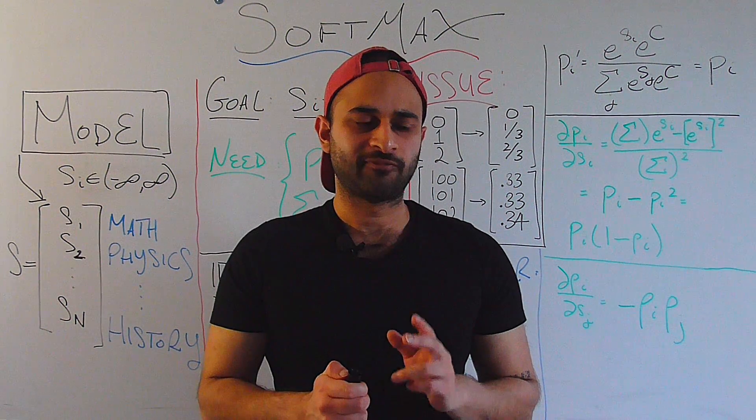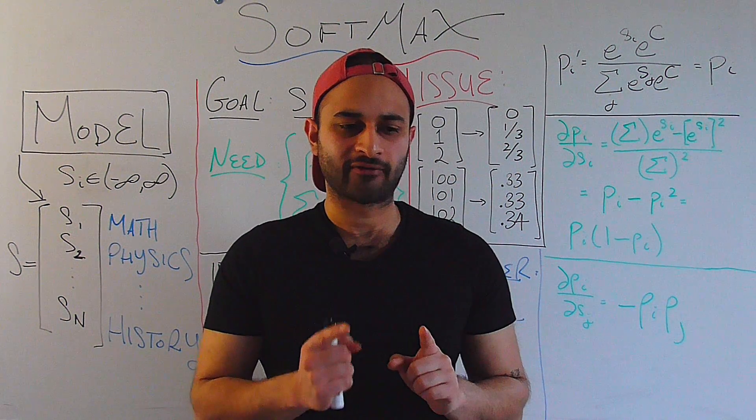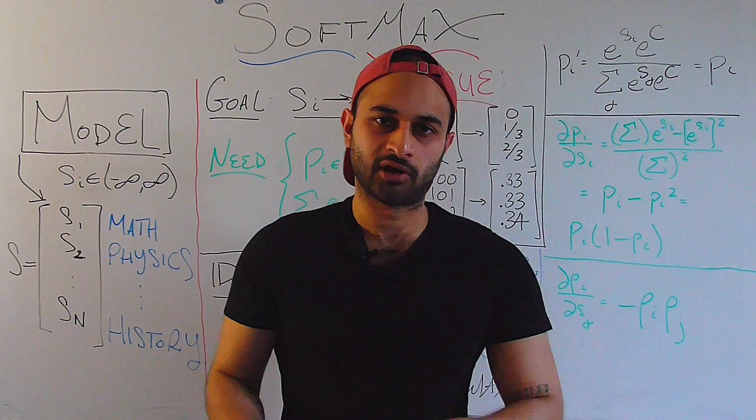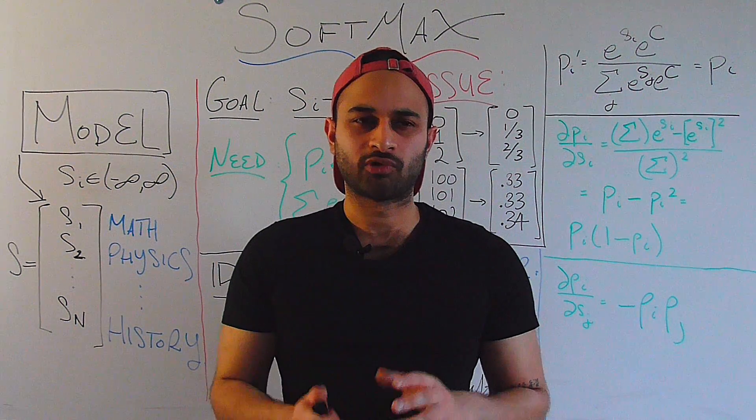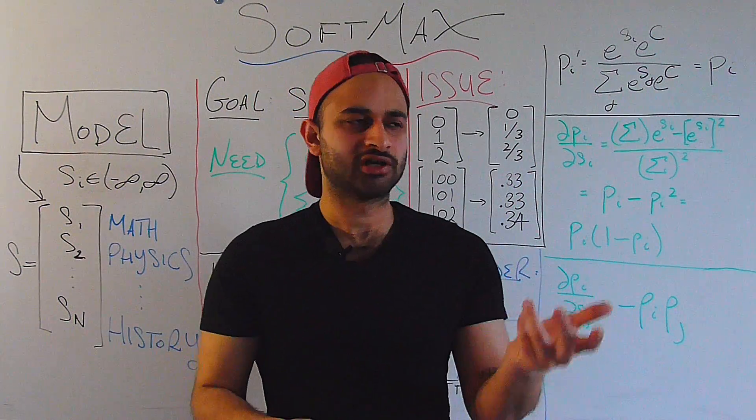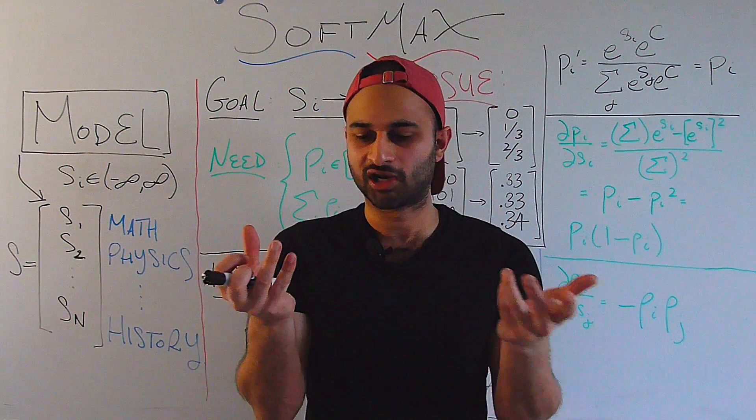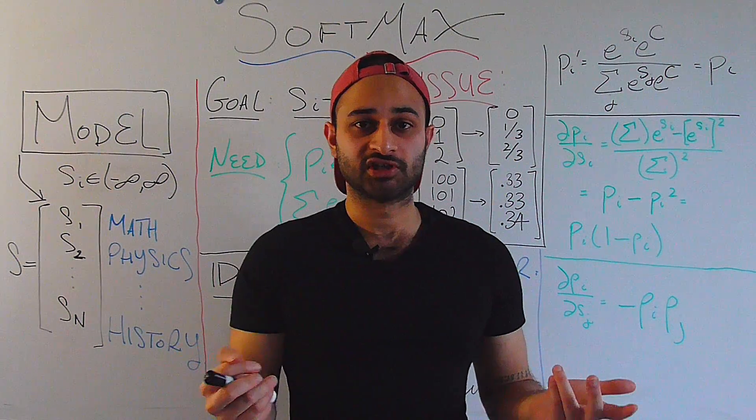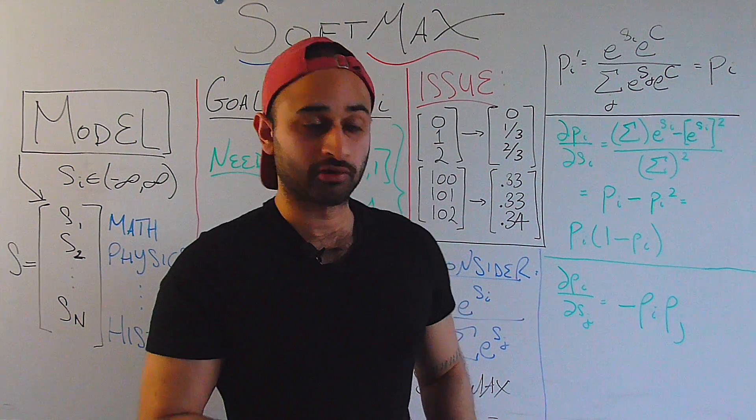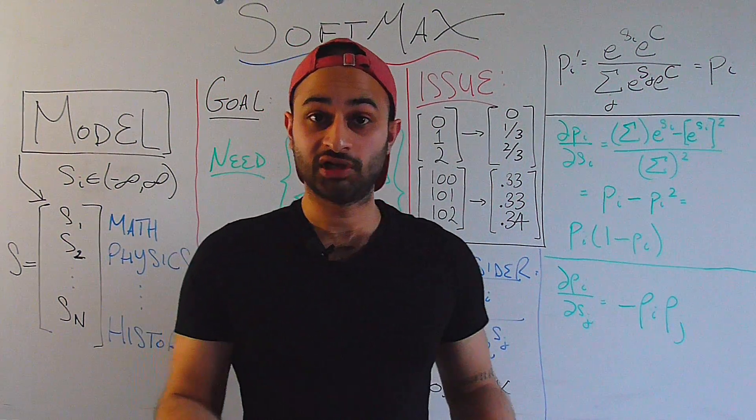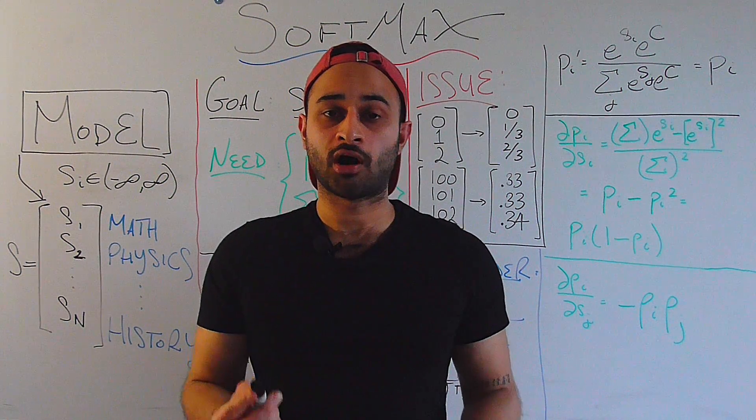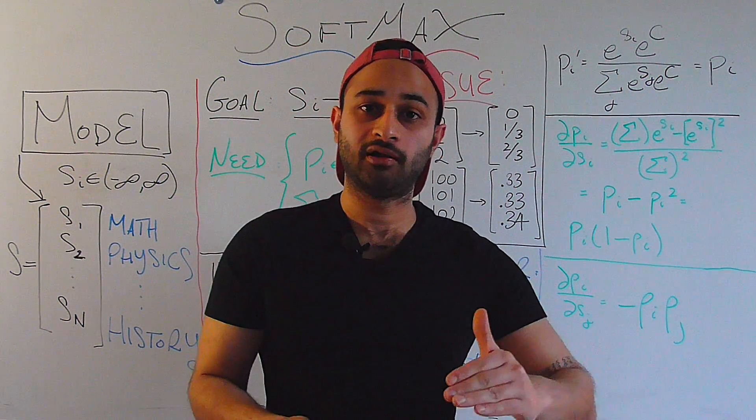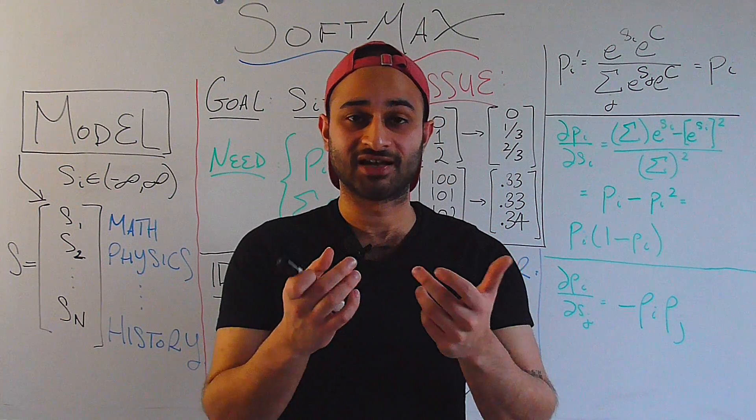Now think about what that means. If pi and pj are both equal to one-half, that means that all the other majors in the list are basically invalid. They're all probabilities are zero. And we're just really trying to choose between, is the student going to study math or are they going to choose history? And we have an equal chance of both. Now again, going back to our previous intuition, if you nudge that a little bit by increasing the score of history, for example, then that's going to cause the probability that the student is going to choose math to go down by a lot, because we're basically breaking that tie.